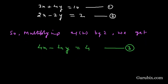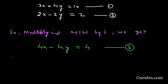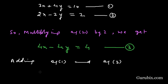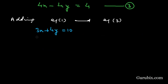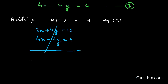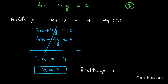Now we shall add equation number 1 and equation number 3. We have 3x + 4y = 10 and 4x - 4y = 4. Adding them, the y terms cancel, giving us 7x = 14, which means x = 2.